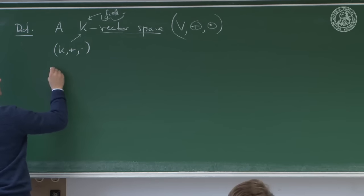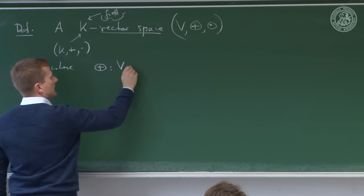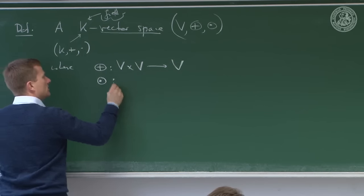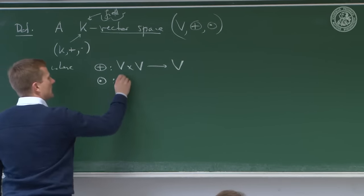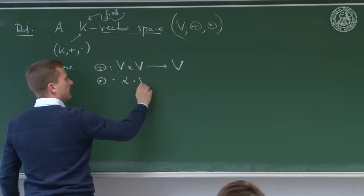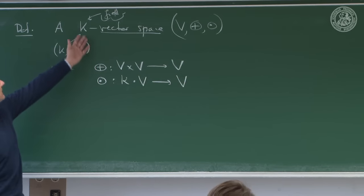The vector addition takes two elements in the vector space and makes an element in the vector space. The scalar multiplication doesn't take two vectors — it takes an element in the underlying field K and a vector and makes it into a vector. The standard example is a real vector space over ℝ, where you can add vectors and perform scalar multiplication. These satisfy a new set of rules: CANI for the vector addition — the same laws applied to vector space elements.